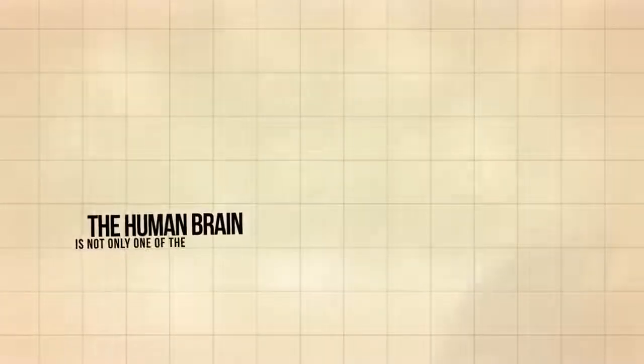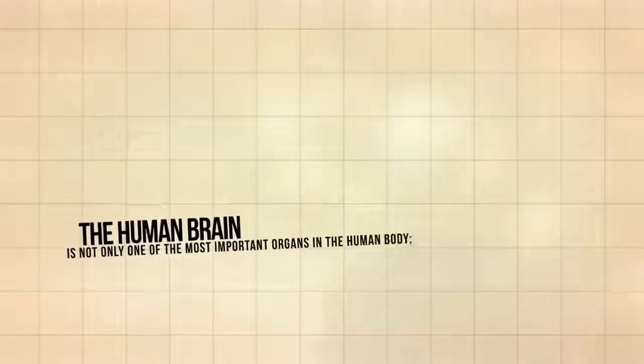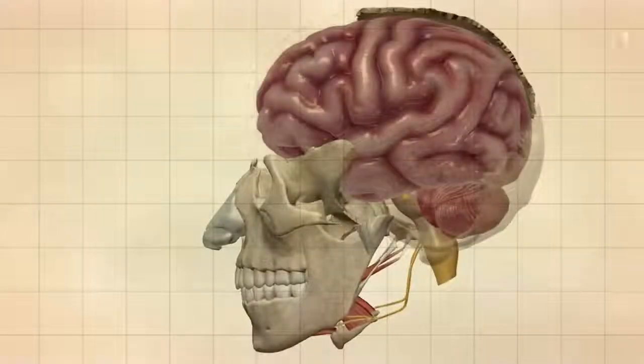The human brain is not only one of the most important organs in the human body, it is also the most complex. The brain is divided into four major sections known as lobes.